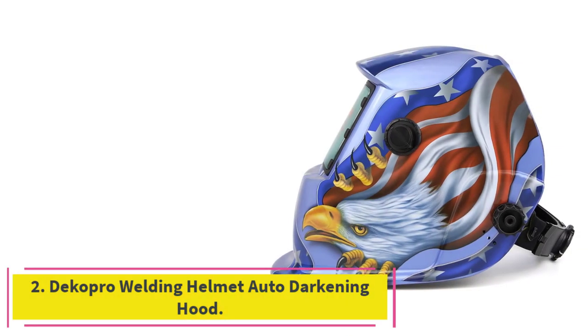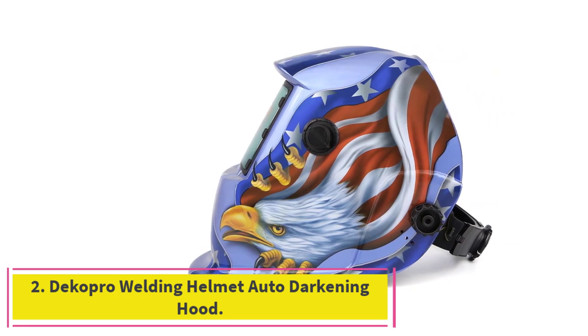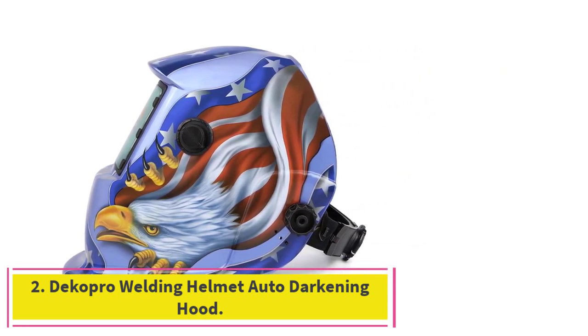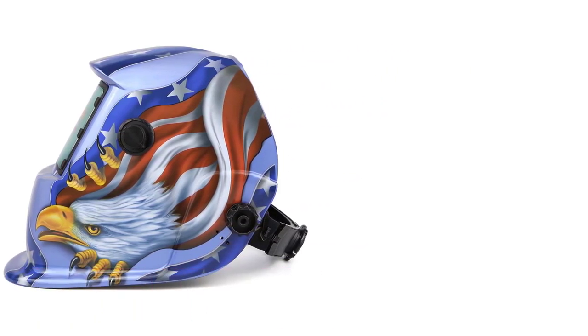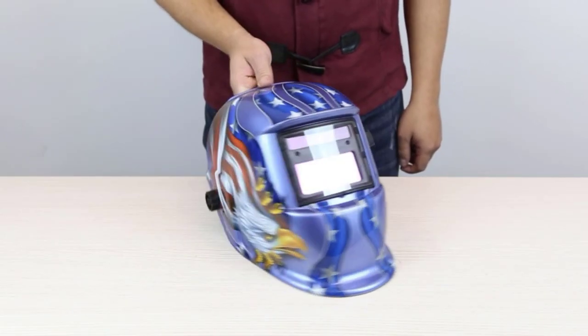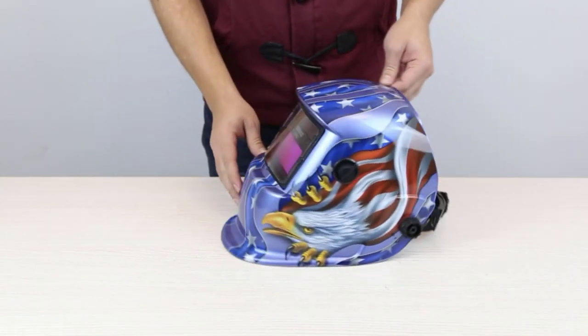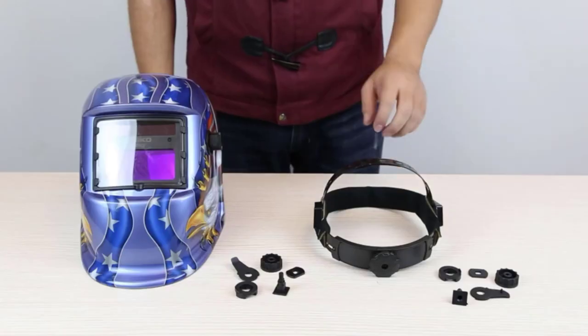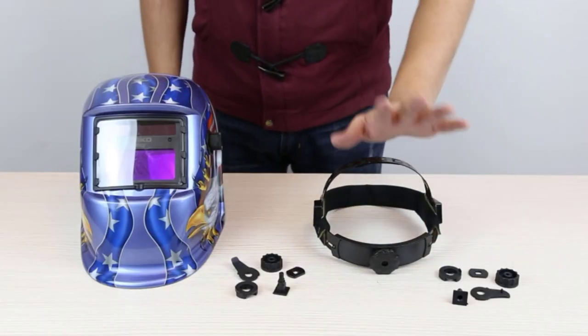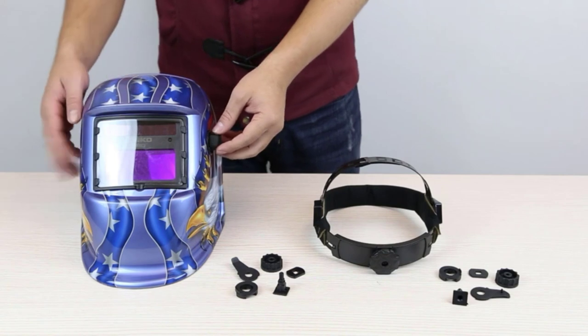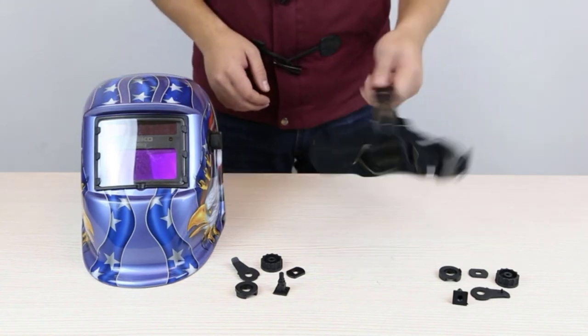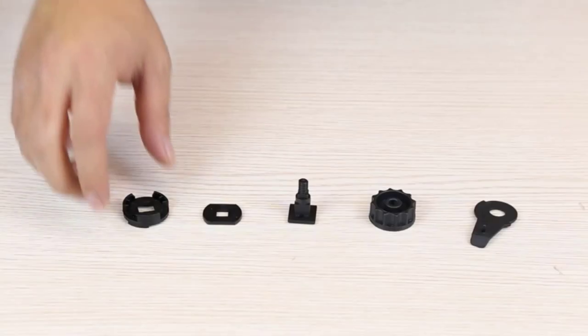At number 2, Dicopro Welding Helmet Auto Darkening Hood. This tool promises optimum protection for the neck and the head. Boasting a shade rating of around 16.1 by 1-1-2, one thing that comes as a guarantee with this headgear is that it offers ample safety and security, even when there is a power failure.